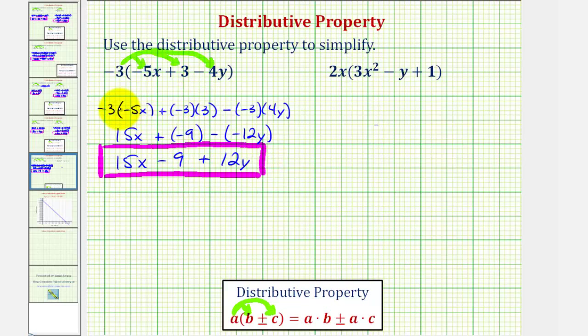Another way to simplify this without showing so much work would be to think of negative three times negative five x which gives us positive 15x. Then negative three times positive three which is negative nine, so we just write minus nine. And then finally negative three times negative four y which would be positive 12y, so we can just write plus 12y.